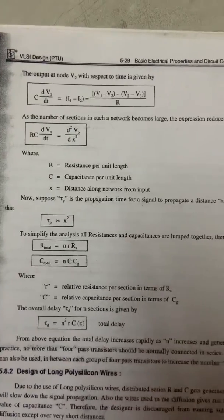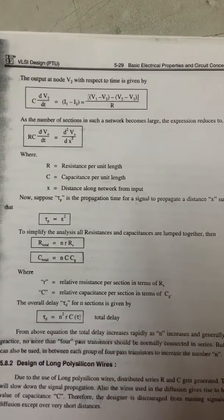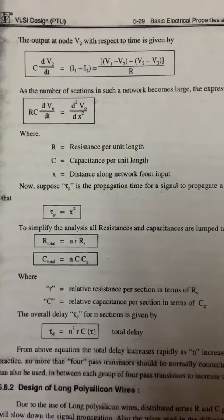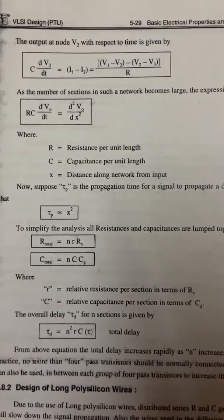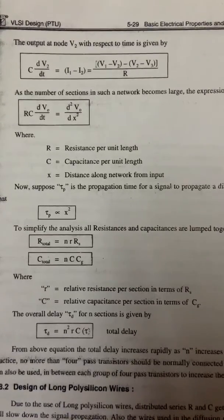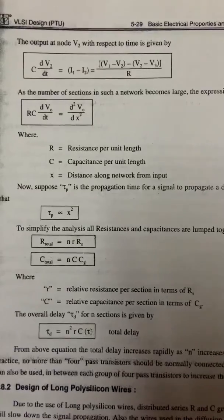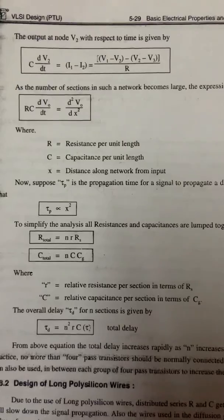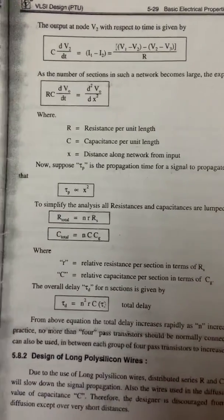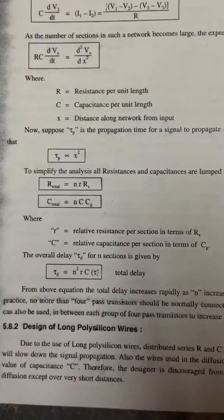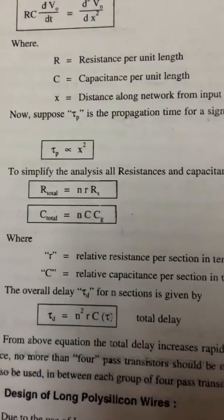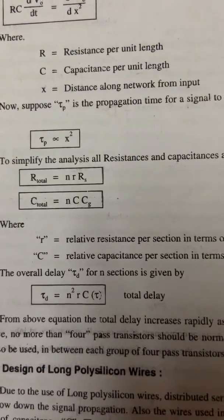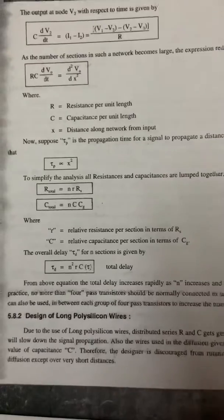To simplify the analysis, all resistances and capacitances are lumped together. Total resistance equals n·r, where small r is the relative resistance per section in terms of Rs. Total capacitance equals n·C, where capital C is the relative capacitance per section in terms of Cg. The overall delay τd for n sections is given by the formula: τd = n²·r·C·τ, representing the total delay.